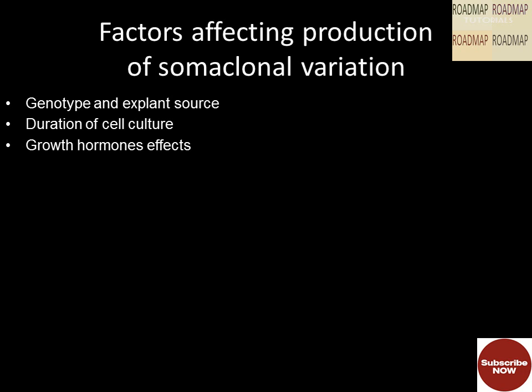Growth hormone effects: plant growth regulators in the medium influence karyotypic alterations in cultured cells and therefore the development of somaclones. Growth hormones such as 2,4-D and NAA (naphthalene acetic acid) are frequently used to achieve chromosomal variability. Besides these factors, selection of somaclonal variations with in vitro selection is dependent on parameters like the selection of propagule (cells, protoplasts), selection agent (toxin, herbicide, amino acid analogue), technique used for selection, stability of resistant substance, in vivo testing procedure, and ability for regeneration of plants.